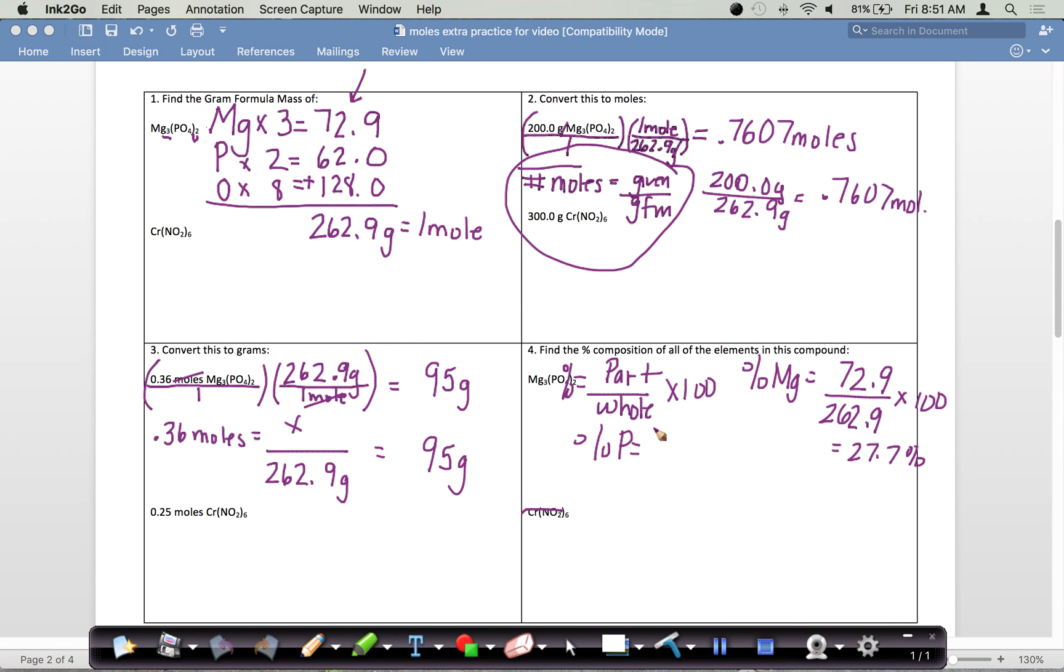For the percent of phosphorus, we did phosphorus, which from number one was 62.0, over the total, which was 262.9, times 100, and that came out to 23.6. For the percent of oxygen, we put oxygen's total, which was 128, over the total mass of 262.9 times 100, and we get 48.7 percent. When we add these percents together, we should get about 100, and we do. When you add up your percents of your parts, you should get very close to, if not, 100.